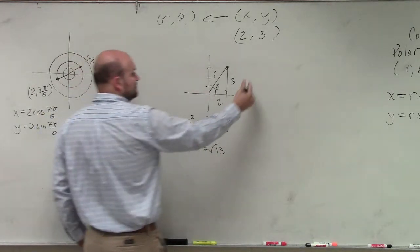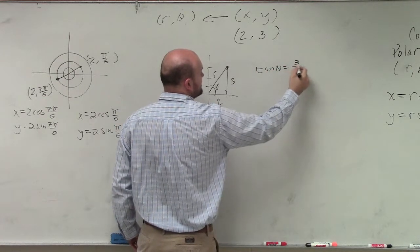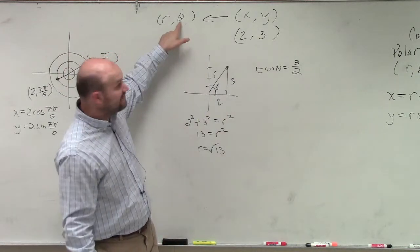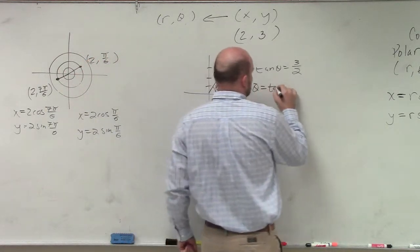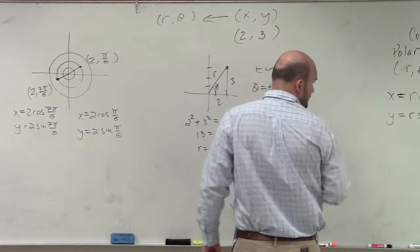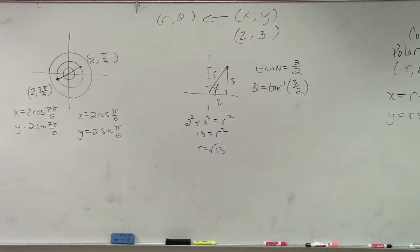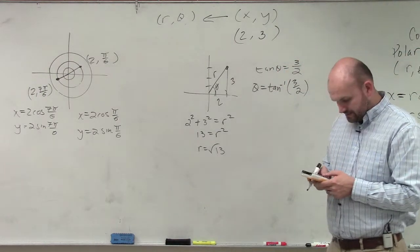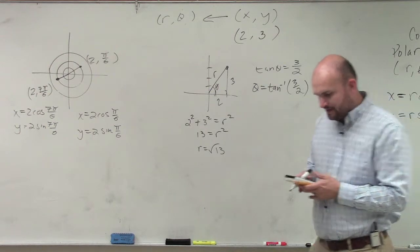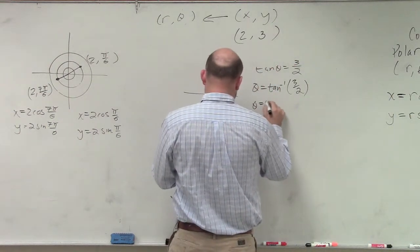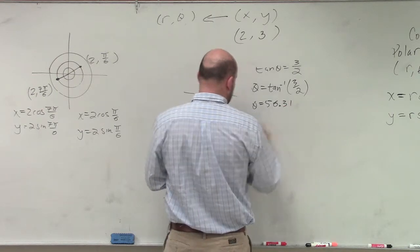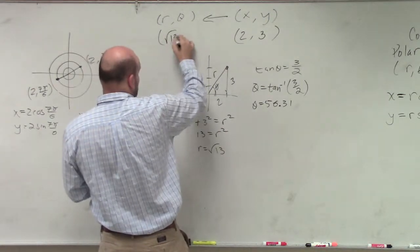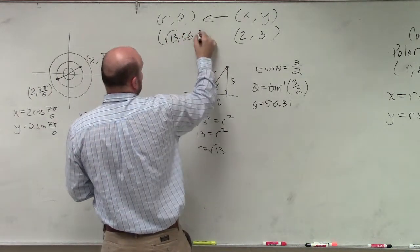To find angle theta, you would say tangent of theta is equal to opposite over adjacent. But to solve for theta, you need to find theta. So theta is equal to tangent inverse of 3 over 2, which is the same thing as 1.5. Make sure that you're in degree mode and do tangent inverse of 1.5. We get theta equals 56.31 if you round to the nearest thousandth. So my coordinate point in polar form would be square root of 13 comma 56.31.